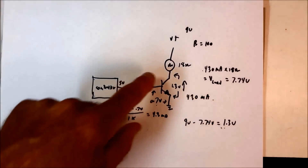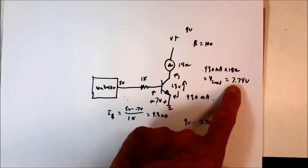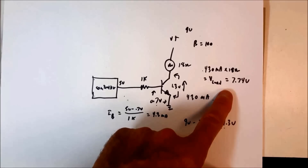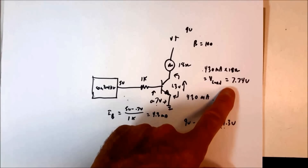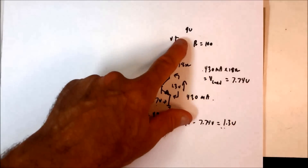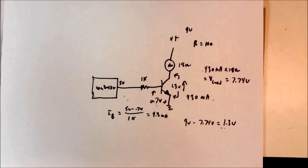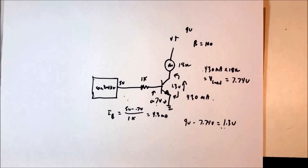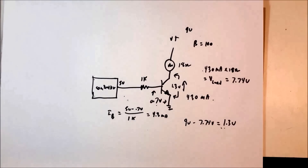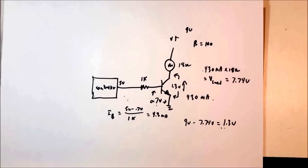Sometimes you can do these problems and come up with a case where the calculated voltage is larger than 9 volts — that's physically impossible. When the current times the resistance comes out larger than V+, that just means the transistor is saturated and it can't be any more saturated than saturated. You make the determination that the transistor is saturated and you're done. You can't defeat Ohm's law — you can't come up with a higher voltage across the load than you have available to it.